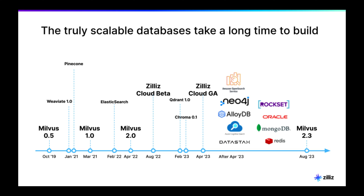This scalability is crucial for developers working on AI applications where the volume of data keeps expanding. Milvus also sets itself apart by providing a specialized solution for vector embedding storage and retrieval. This focused approach ensures that developers have a dedicated tool tailored to the unique requirements of AI and machine learning applications. Milvus is not just keeping up — it's setting the bar high for scalability, reliability, and specialization.